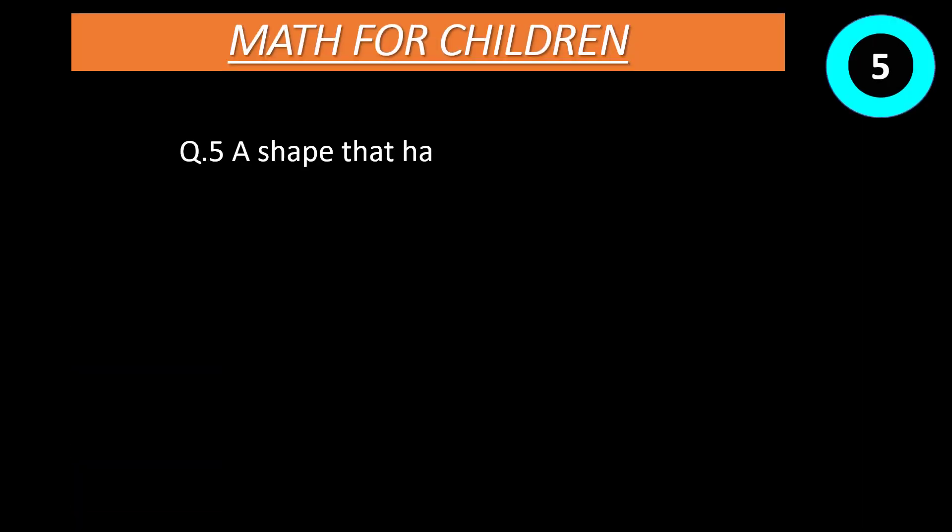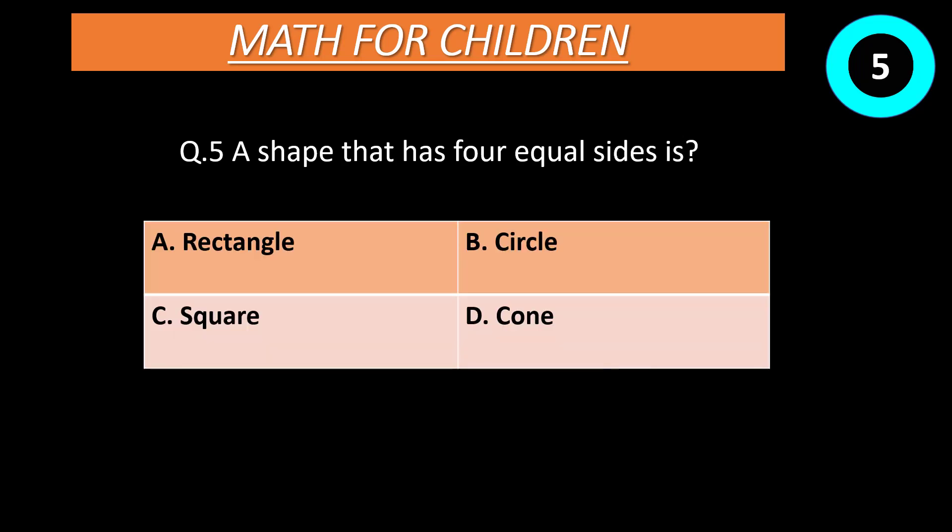Question number 5: A shape that has four equal sides is? Correct answer is C, square.